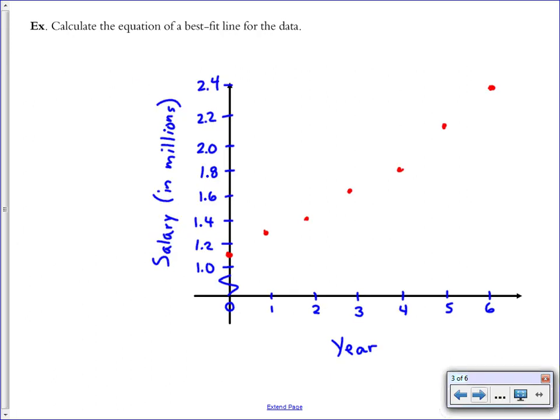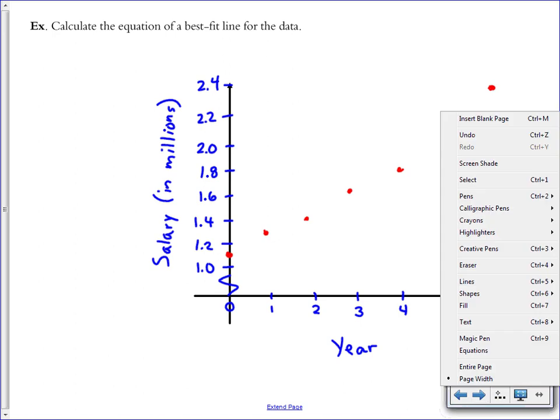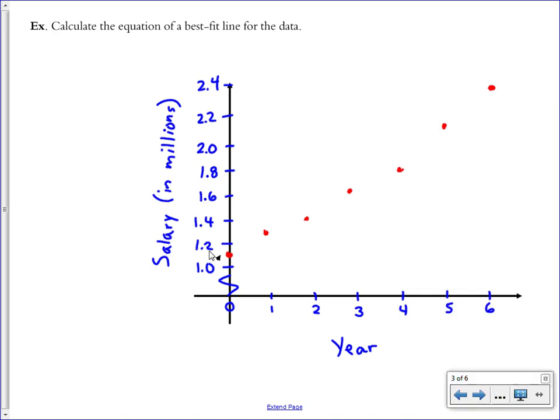So it says calculate the equation of a best fit line for the data. So here's a reconstruction of the graph from the previous slide. It's got my seven points on it. And I'm going to try to come up with a line that approximates the shape of this data. So as you are doing this on paper, use a ruler and just kind of move the ruler around until you feel like you have the same number of points above the line as you have below the line.